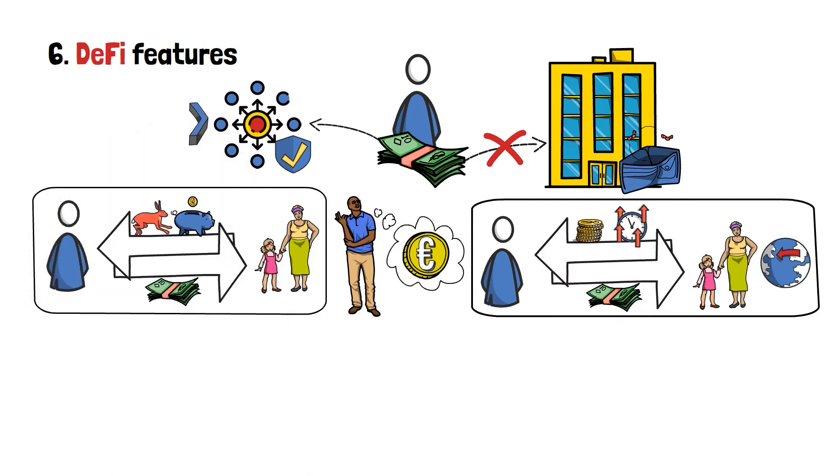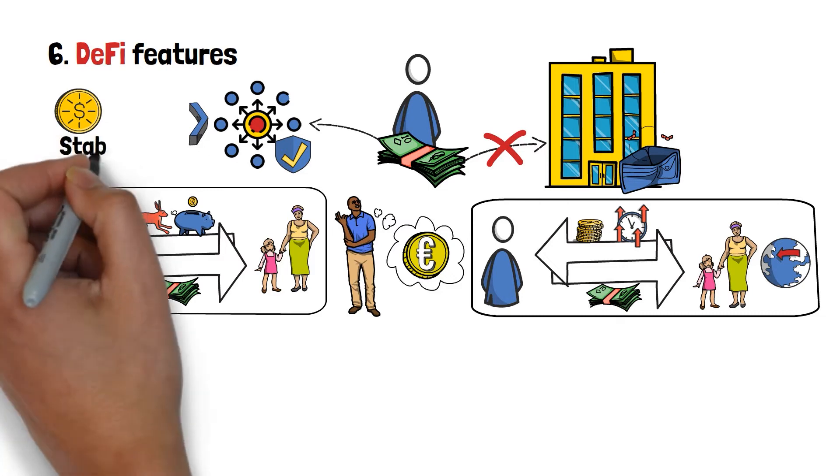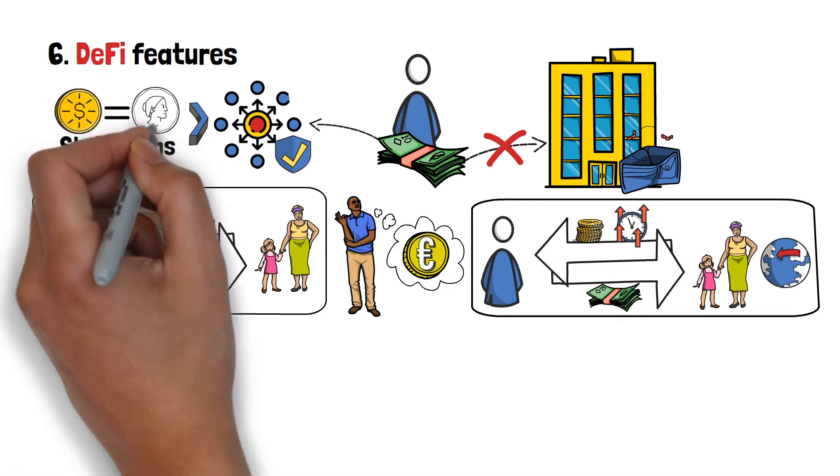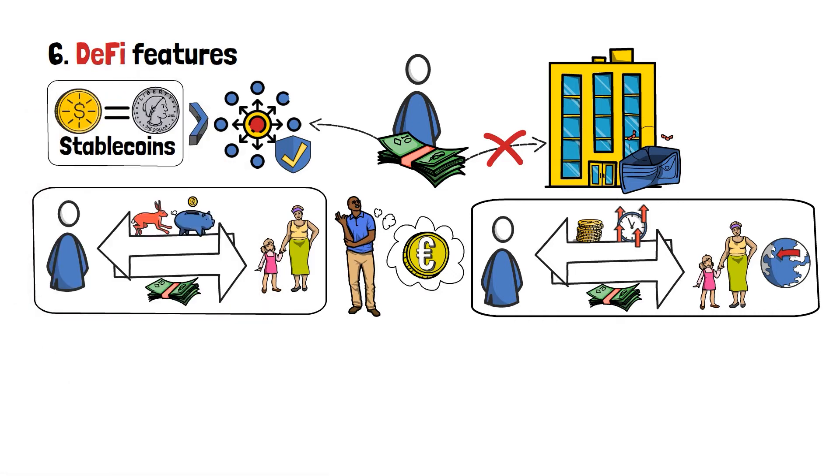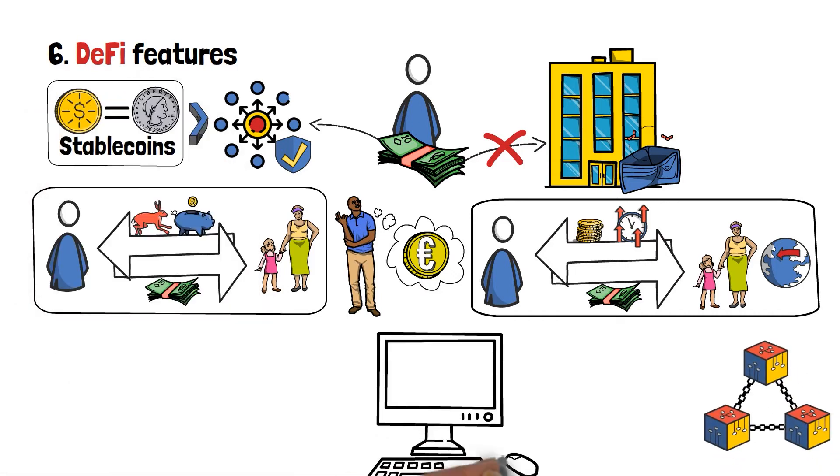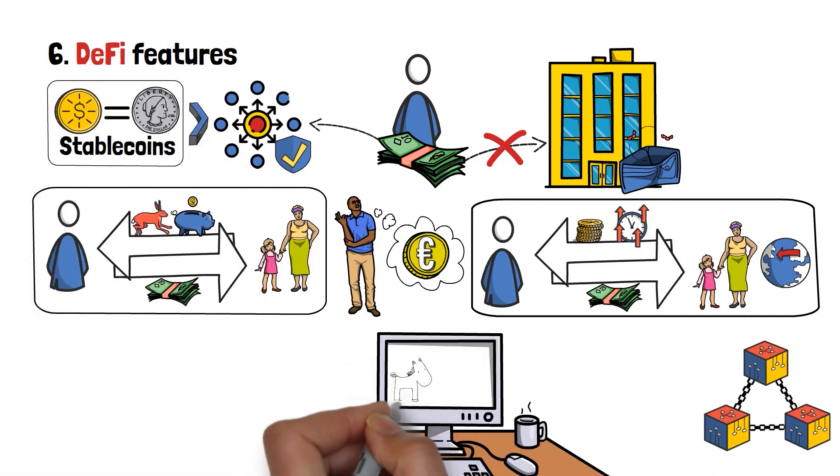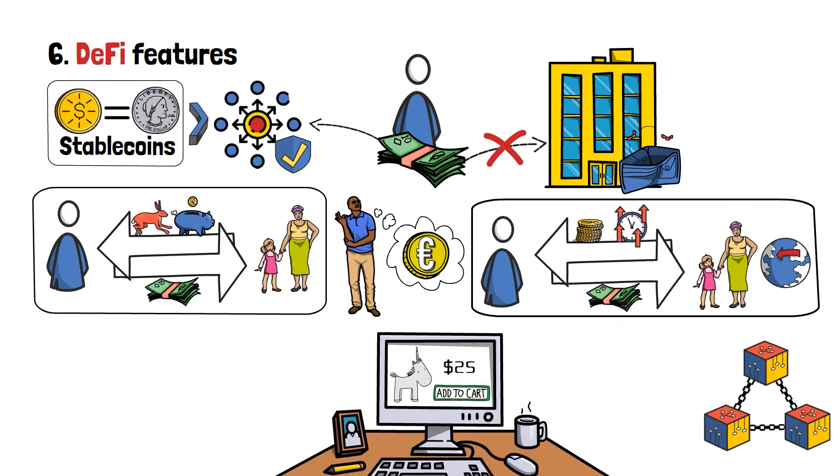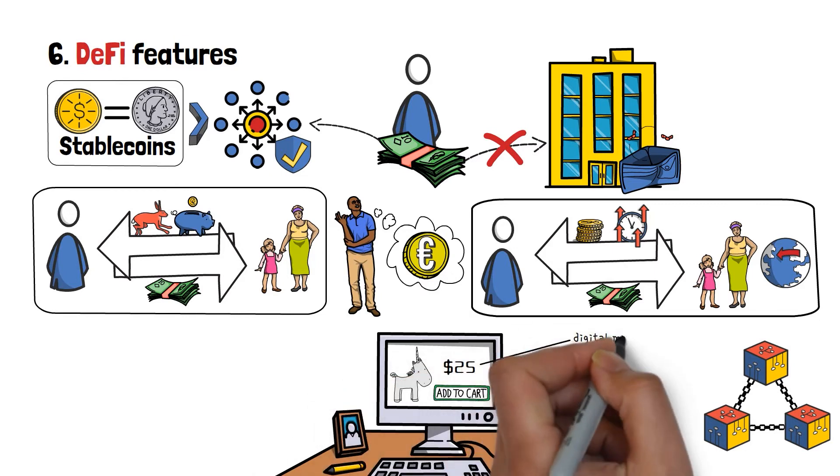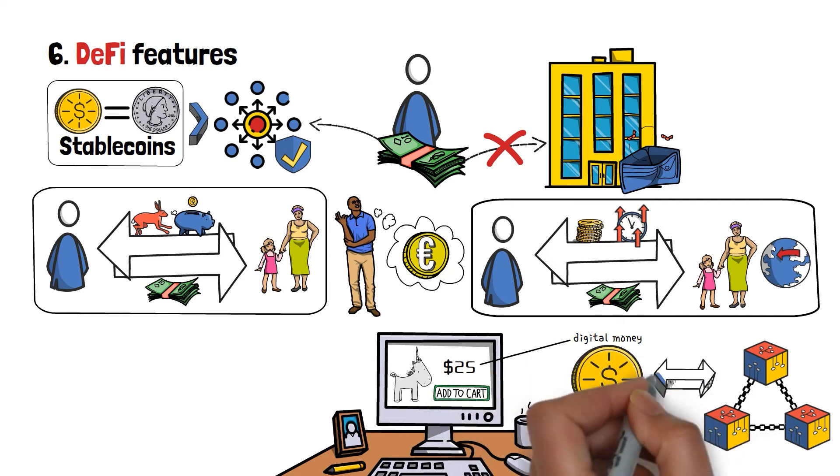Decentralized finance mostly revolves around what are called stablecoins. Essentially, these are digital US dollars that are created with the help of the earlier mentioned blockchain technology. It's like, when you purchase something online, and make a payment with US dollars. Technically you're paying with digital money. Stablecoins are just like that, except that they're also based on blockchains, which makes them much more secure and reliable to use.